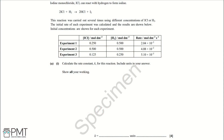Iodine monochloride, ICl, can react with hydrogen to form iodine. This reaction was carried out several times using different concentrations of ICl or H2. The initial rate of each experiment was calculated and the results are shown below. Initial concentrations are shown for each experiment.